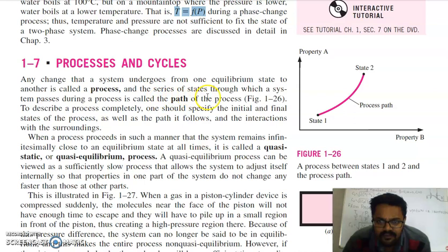The series of states through which a system passes during a process is called the path. State 1 doesn't go directly to state 2. So it will first go here, then here. You can say a process is a combination of change in successive states from state 1 to state 2. You can divide this into infinitely small changes—a large number of processes with small changes.